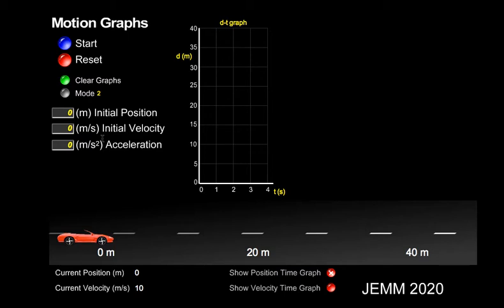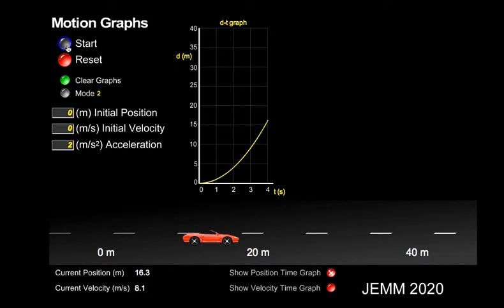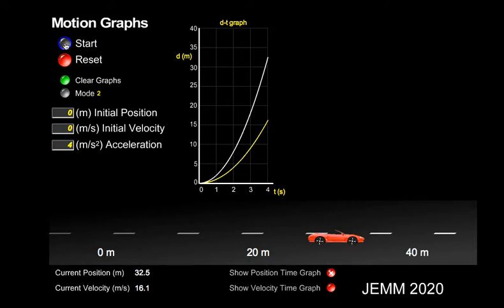Now let's look at a situation when the object is actually accelerating. Let's give it an acceleration of 2 meters per second squared. Notice on a position time graph, the line drawn has a curve to it — it's actually a parabola. Let's increase the acceleration and see what that looks like. The curve gets even more steep, and if we increase it even more, the curve gets even steeper.